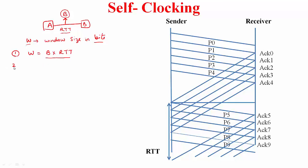What is the maximum throughput that can be achieved between A and B? This will be the link capacity, equal to B. Within one round trip time you are sending W bits, so the throughput is W over RTT. Setting W equal to the bandwidth-delay product makes this equal to the link capacity.